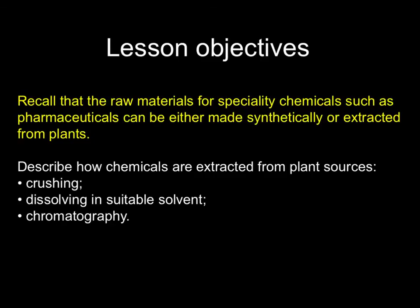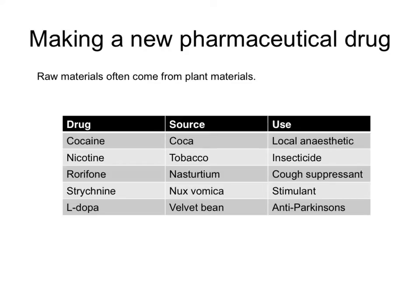Now we look at raw materials for speciality chemicals. These can be either synthetically made or taken from plants. Here are five drugs — the table shows that each derives from plant materials. For example, nicotine from tobacco is not just in cigarettes but is also used as an insecticide. Various other drugs also come from plant materials.